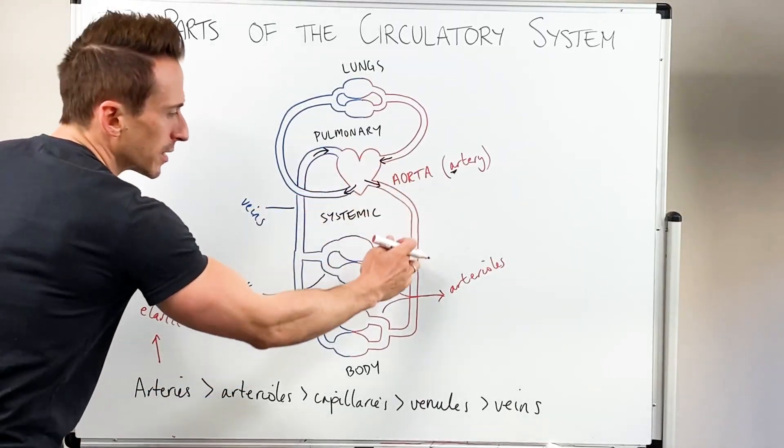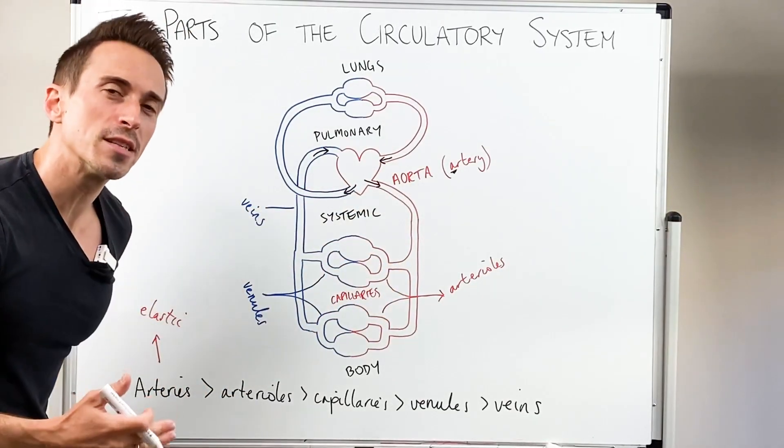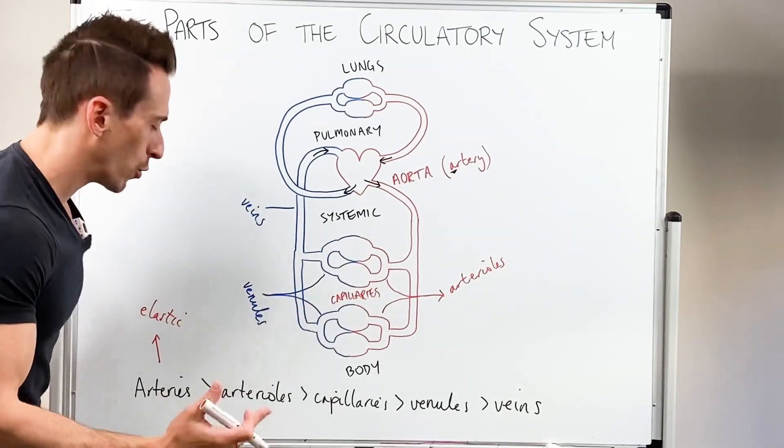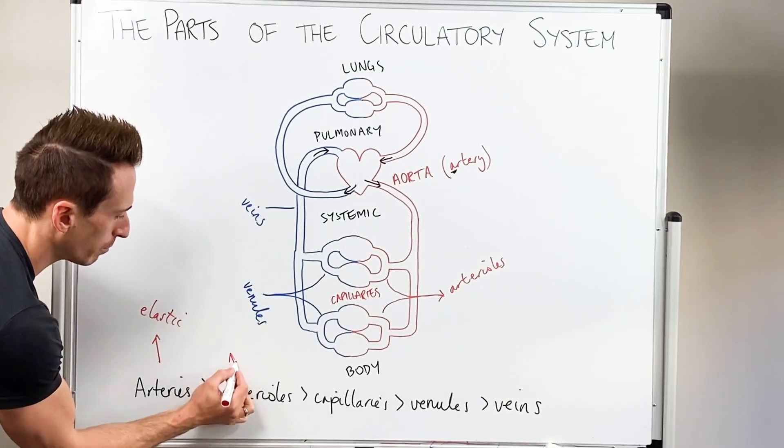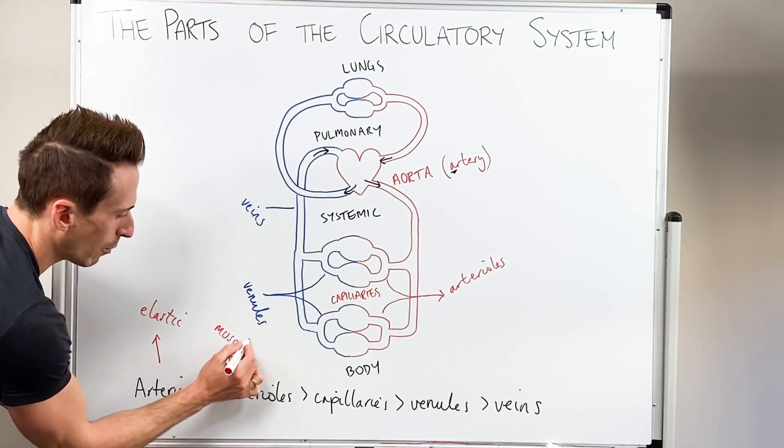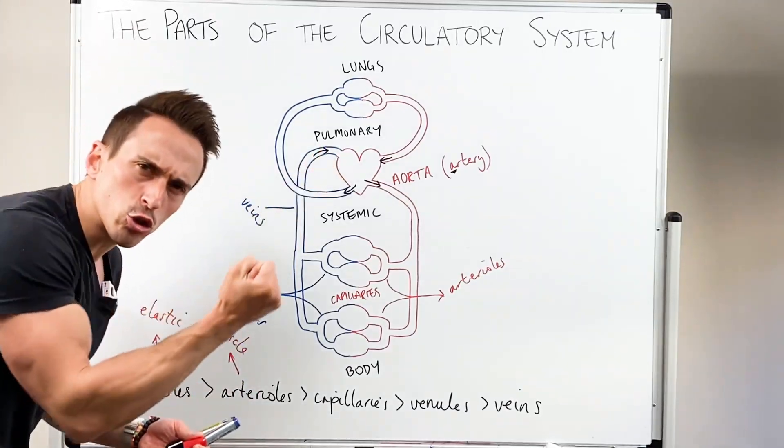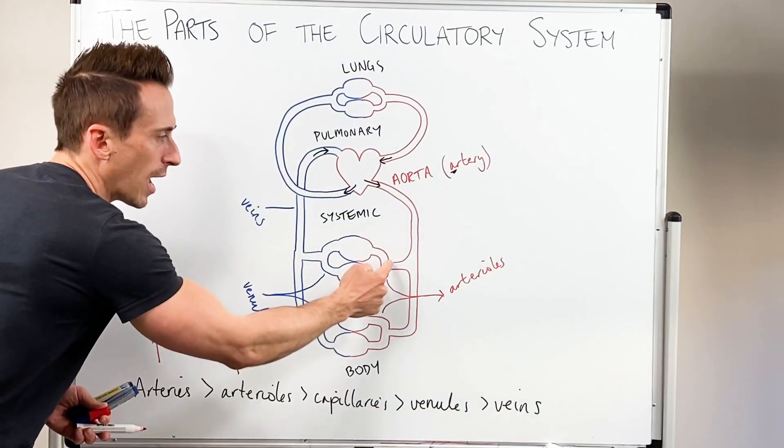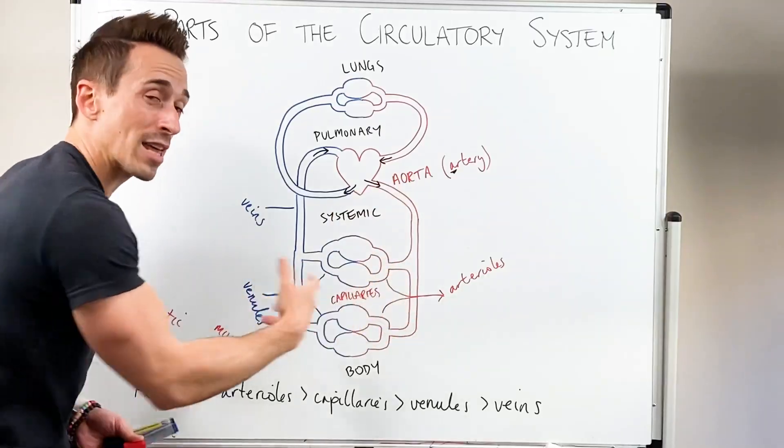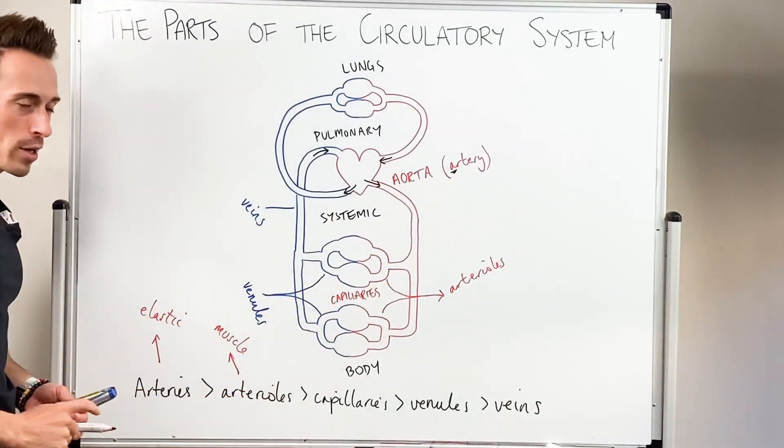But when we get down to these smaller branches of arterioles, they're resistance vessels and they've got a lot of smooth muscle. So they've got a lot of muscle. And what that means is muscles can constrict and relax. And so they can change the blood pressure, and the flow. So that's what arterioles do.